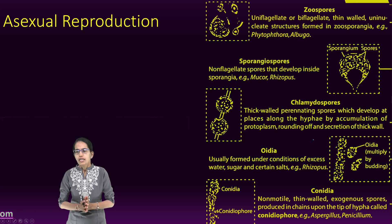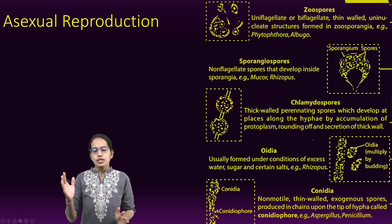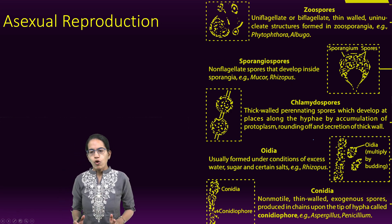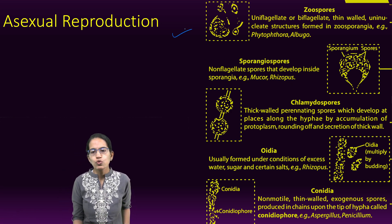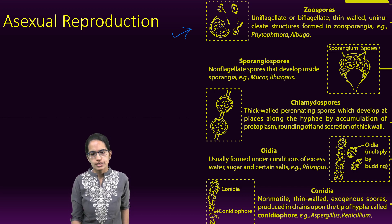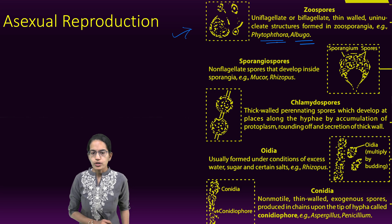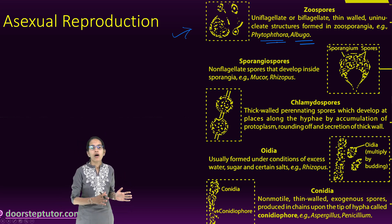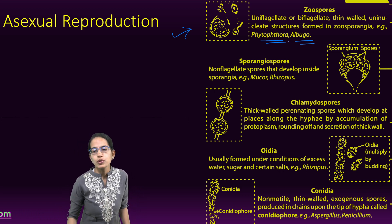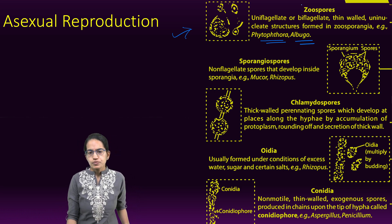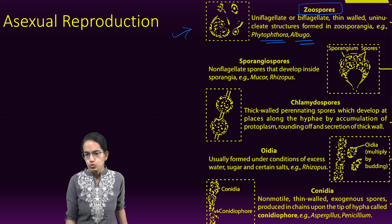Asexual reproduction can occur in the following forms. One is zoospores. Zoospores are thin-walled uninucleate structures which are formed from the zoosporangia. The examples for each of these are important — for example, Phytophthora or Albugo, where reproduction occurs as zoospores.